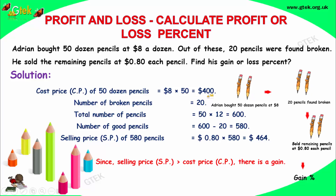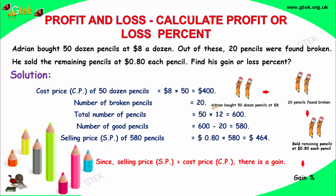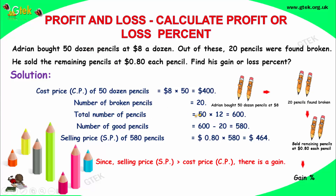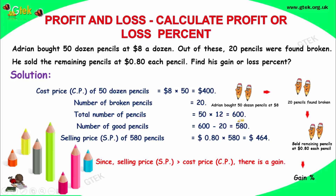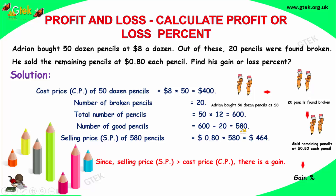The number of pencils broken is 20. The total number of pencils is 50 dozen, because 50 dozen into 12 equals 600 pencils. Among those, 20 are broken. So the number of good pencils is 600 minus 20, that is 580 pencils.